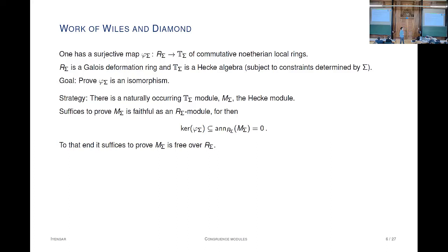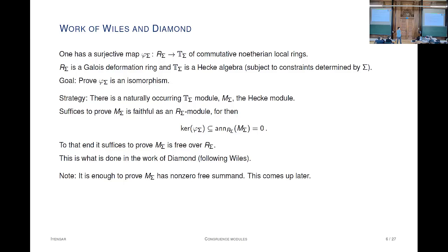In fact, it suffices to prove that M is free, which is a stronger condition. This is what is done in the work of Diamond and Wiles—a certain module over the Hecke algebra is free as a module over the deformation ring, so R_sigma equals T_sigma. I'll note that it's also enough to prove that M has a free summand, because then you get the same conclusion, and this becomes important later.